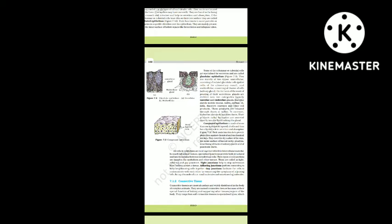Some columnar or cuboidal cells get specialized for secretion and are called glandular epithelium. They are mainly of two types: unicellular, consisting of isolated glandular cells (goblet cells of the alimentary canal), and multicellular, consisting of clusters of cells (salivary gland). On the basis of mode of secretion, glands are divided into exocrine and endocrine glands. Exocrine glands secrete mucus, saliva, earwax, oil, milk, and digestive enzymes released through ducts. Endocrine glands have no ducts; their products called hormones are secreted directly into the fluid bathing the gland.